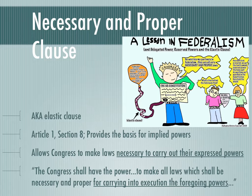Additionally, we have the Necessary and Proper Clause, also known as the Elastic Clause. Either of those terms could be used on the AP test — they're interchangeable. The Necessary and Proper Clause is going to give Congress a lot of power. It is found in Article I, Section 8 of the Constitution. If you recall, we talked about implied powers — those that aren't directly stated in the Constitution but are still claimed by Congress. The reason Congress is allowed to claim those powers is this Necessary and Proper Clause.